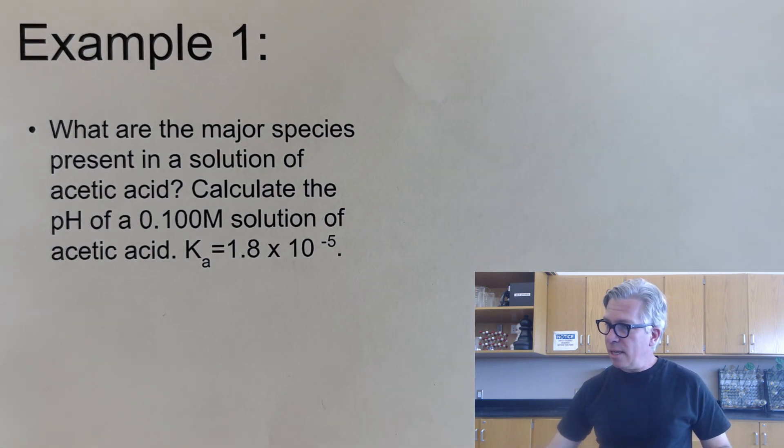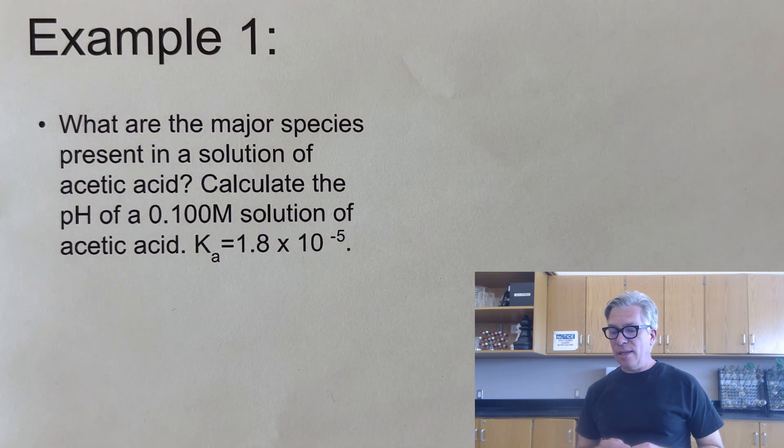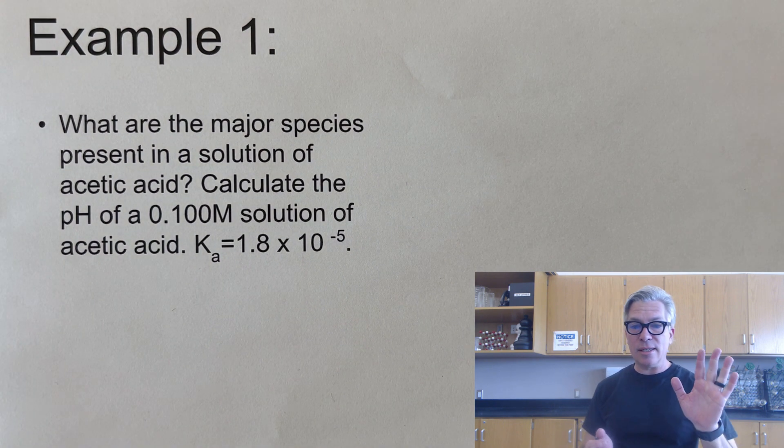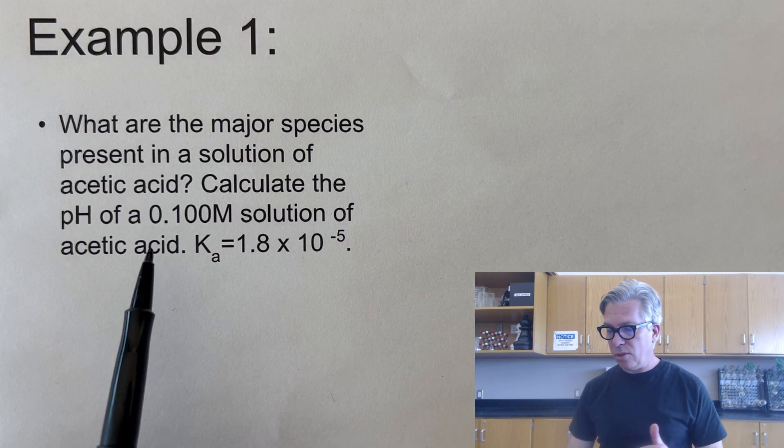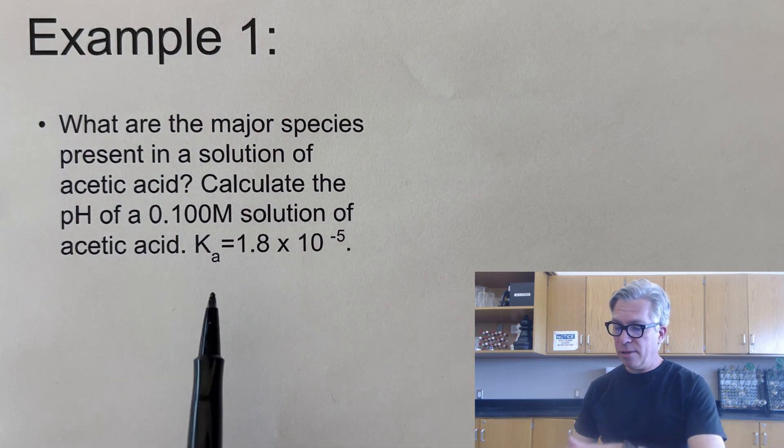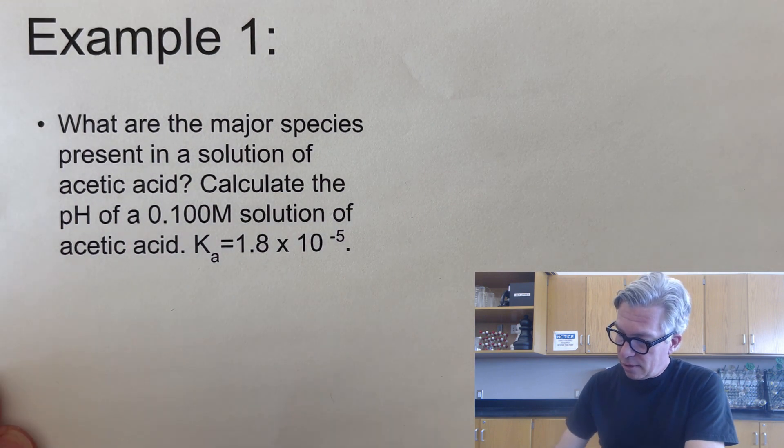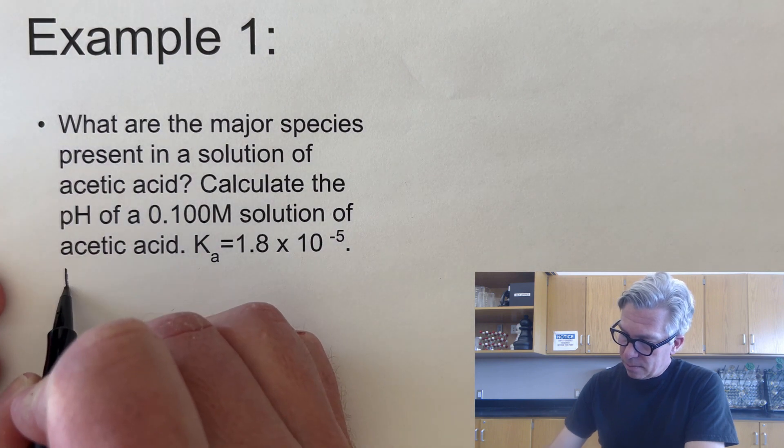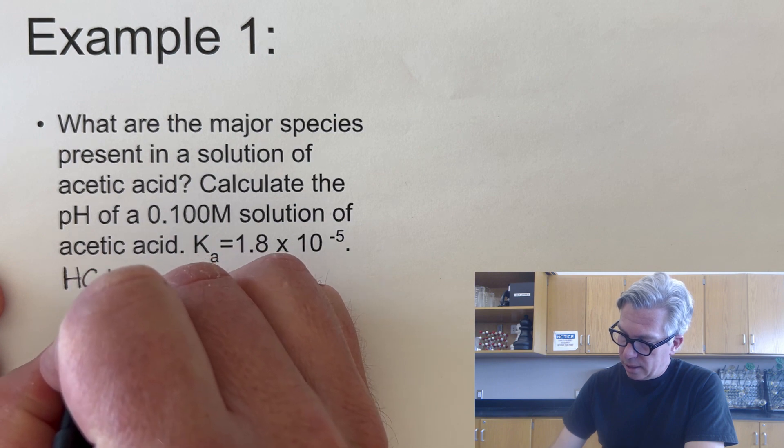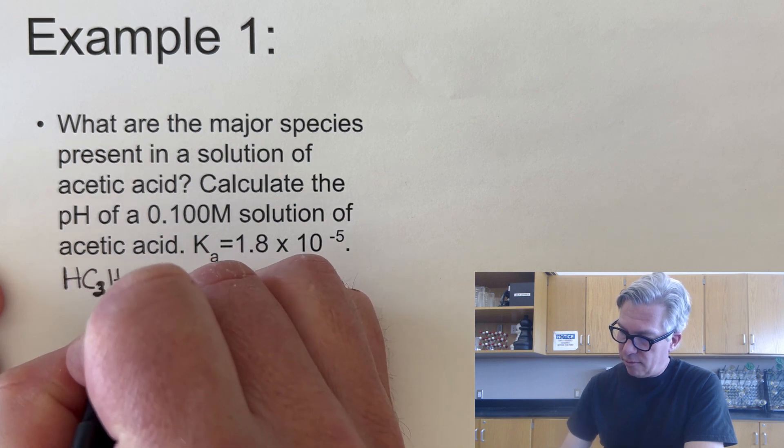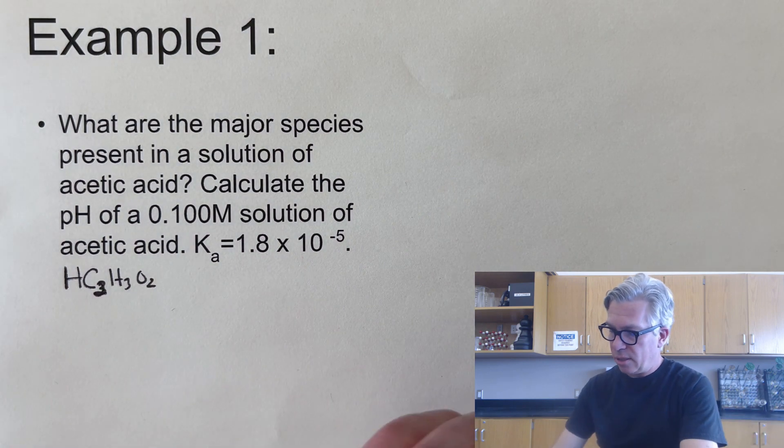Here's a very typical example of the first type. What are the major species present in a solution of acetic acid? I'm doing this as a parallel to the last video so you can see the difference. Calculate the pH of a 0.1 molar solution of acetic acid, and there's its Ka value. Always a good idea to write the equation for the reaction that's going to happen. HC2H3O2 is the formula there, or if you don't know you could just put Ac for acetic, just as long as you can keep track of it.